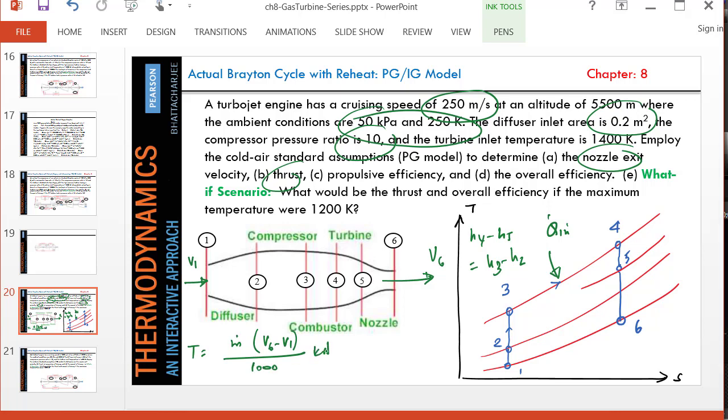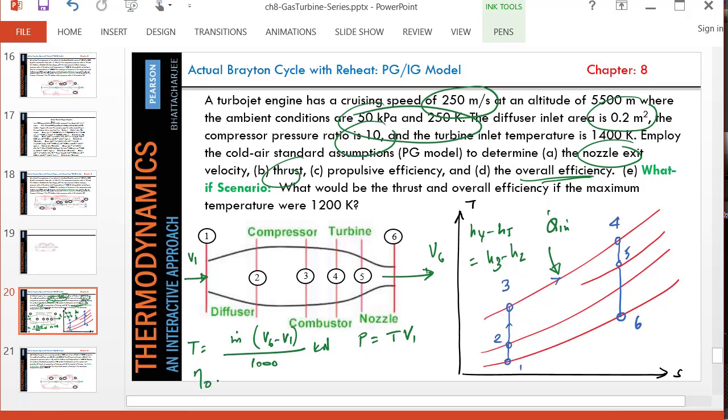Once you know the thrust we can find the propulsive power. Basically, propulsive power is thrust times the velocity of the aircraft, which is v1 in that case. Once we know the propulsive thrust, the overall efficiency, the overall thermal efficiency means the overall equals p divided by q dot in.